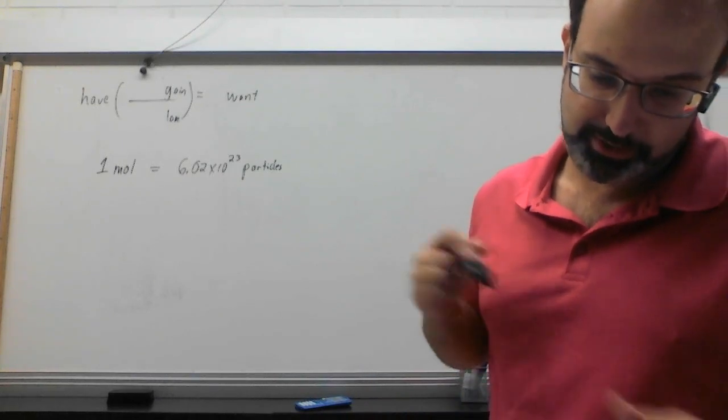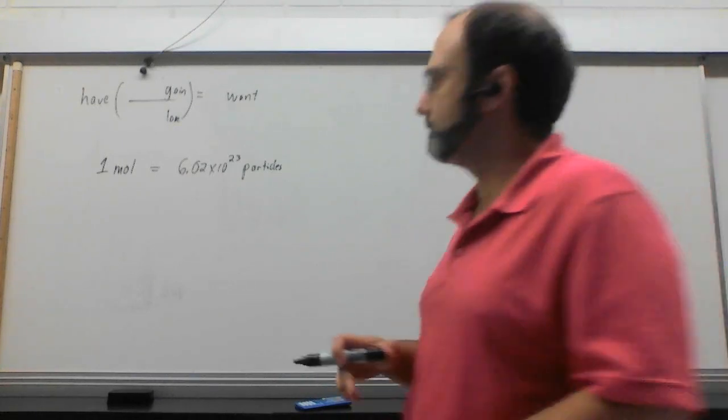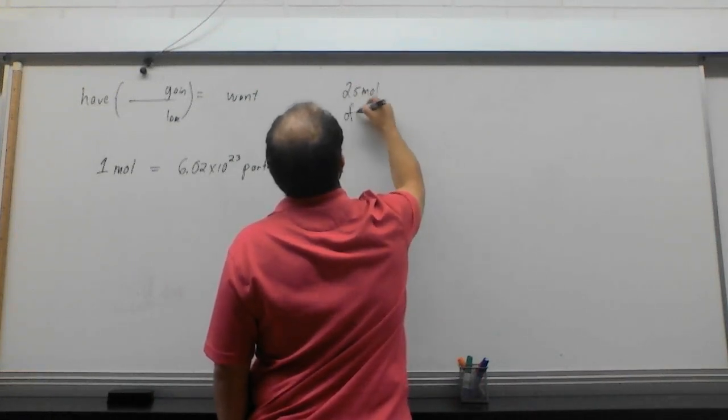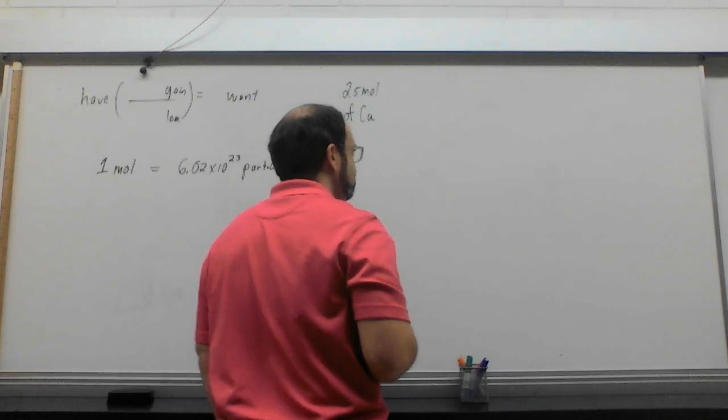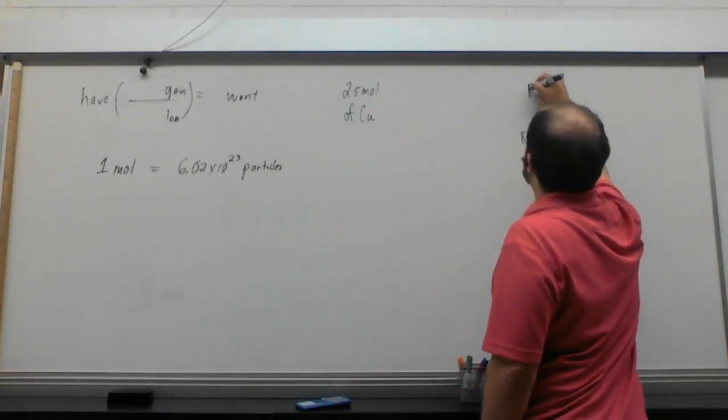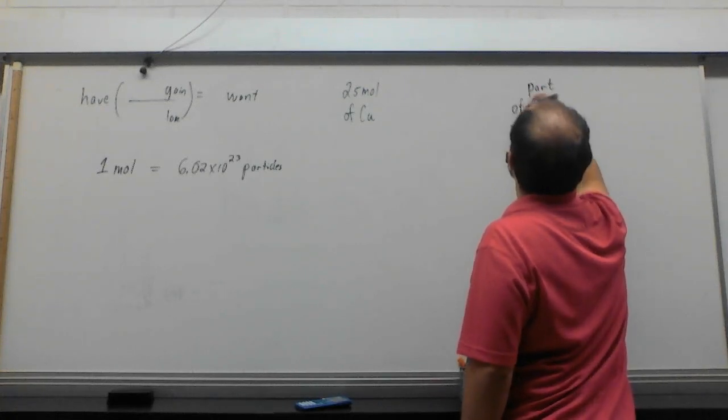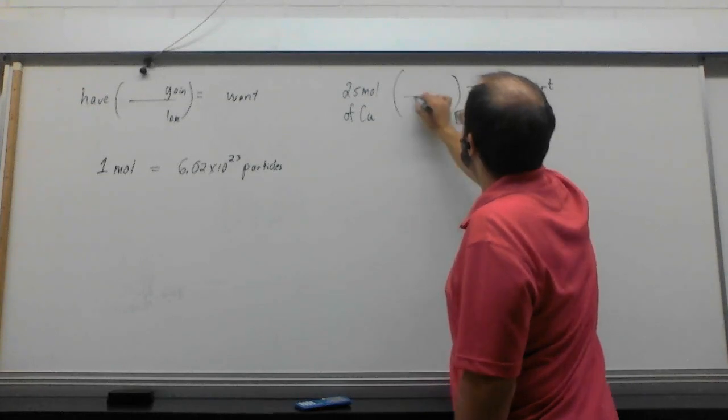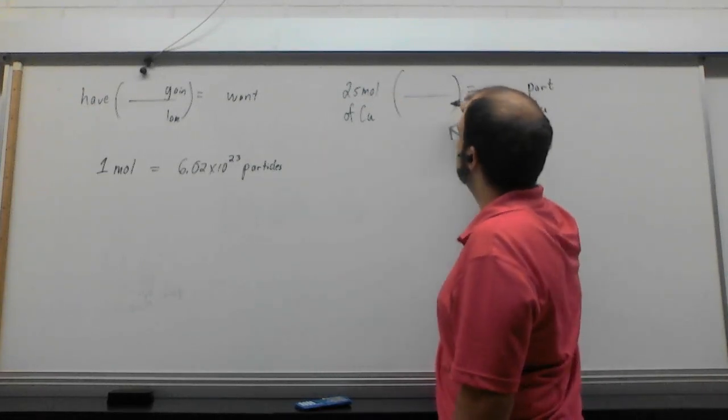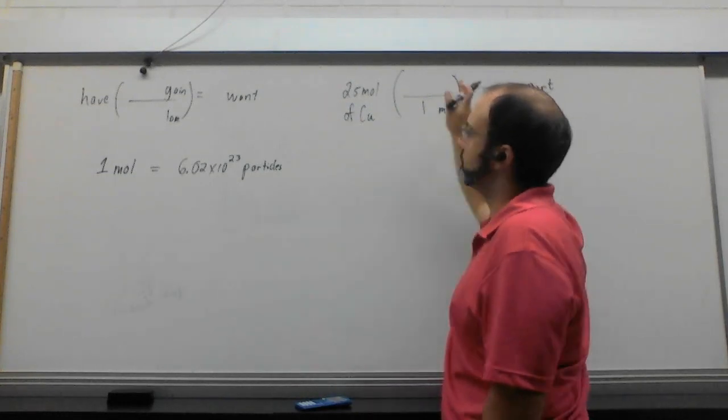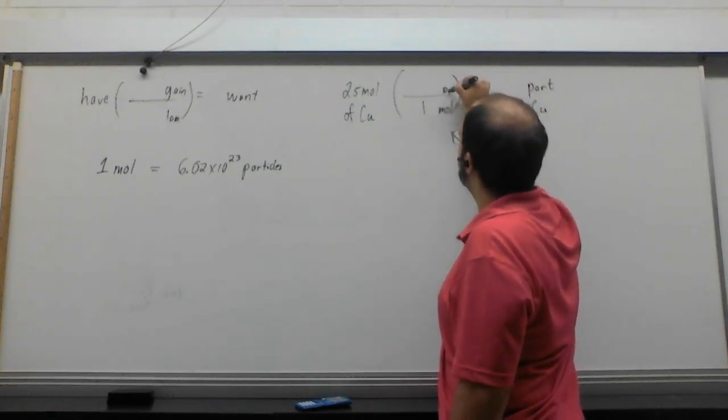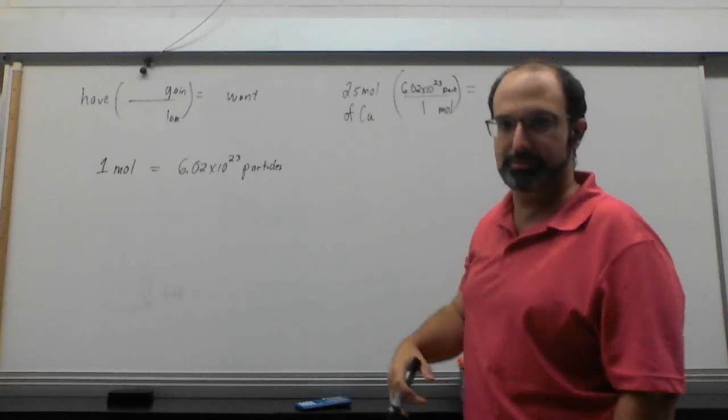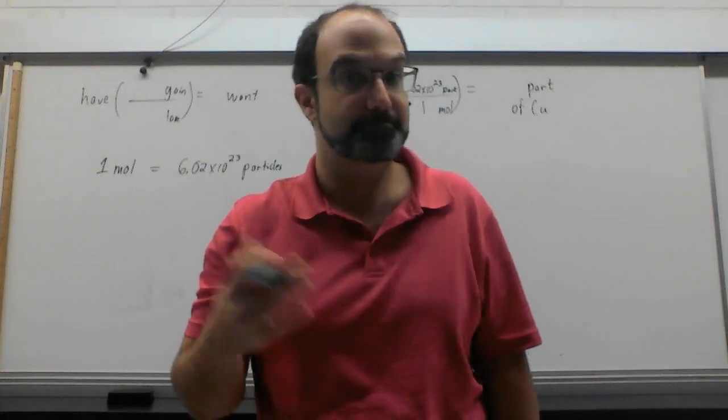The example in your notes here is 25 moles of copper atoms. Okay. So we've got 25 moles of copper. Well, we want particles, usually shortened to part of copper. We want to get rid of moles, right? Because we've already got them, and we want to get rid of those. And we want to get those particles. And there we go. We've set it up. It's just a conversion.